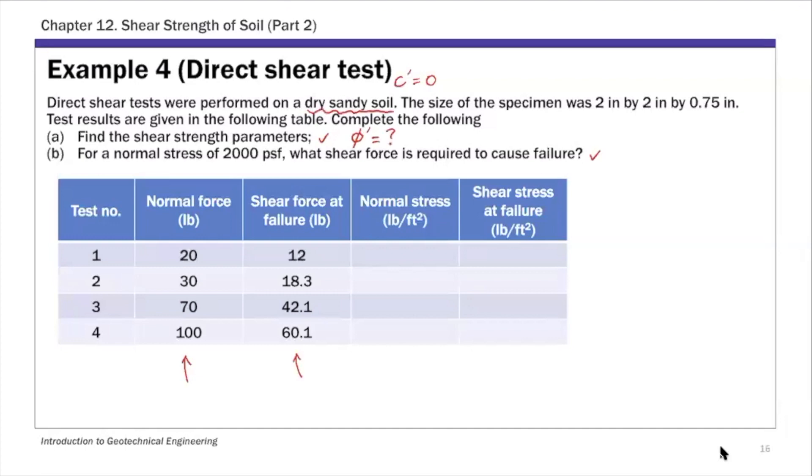We know the size of the specimen: 2 by 2 and the height is 0.75. This 2 by 2 gives the cross sectional area. Cross sectional area A is 2 times 2, which is 4 inch square, and you can convert that to 0.0278 square feet.